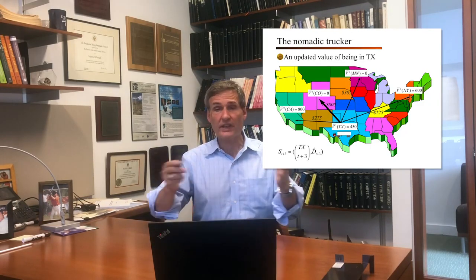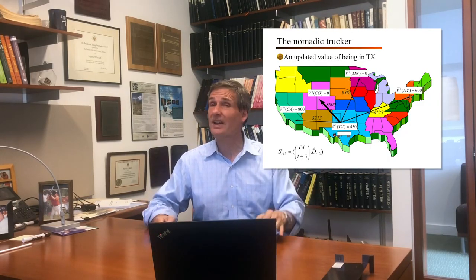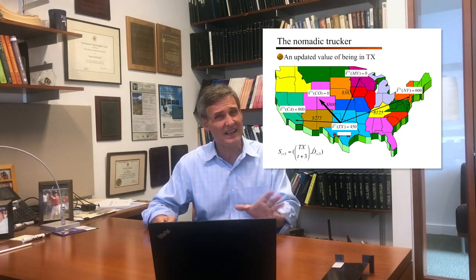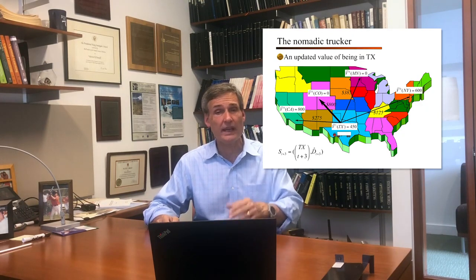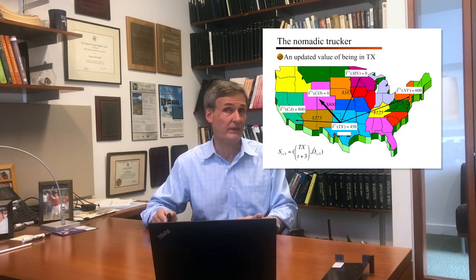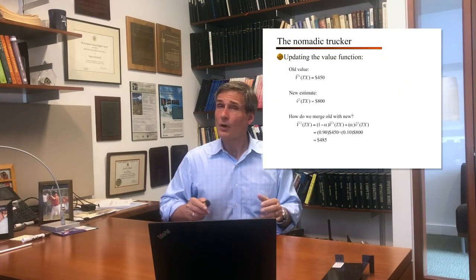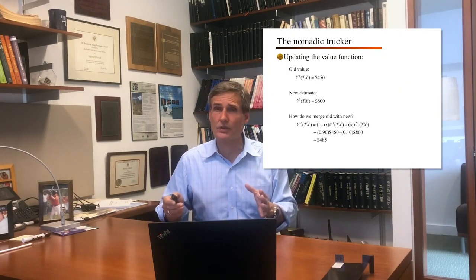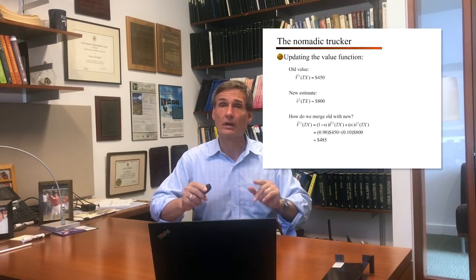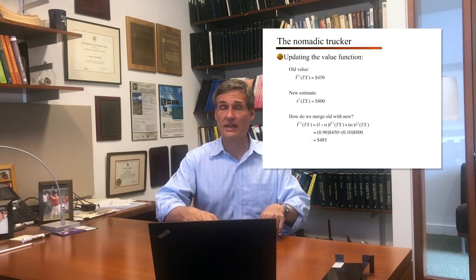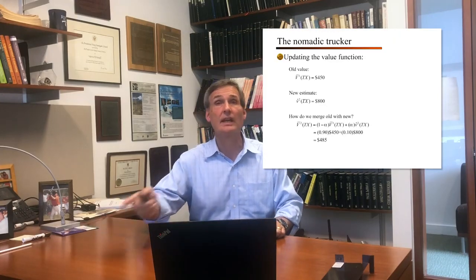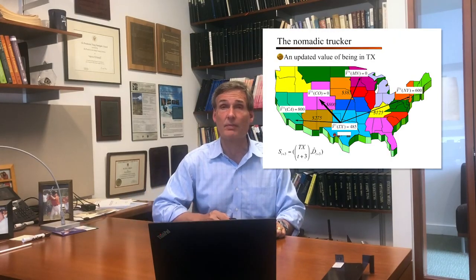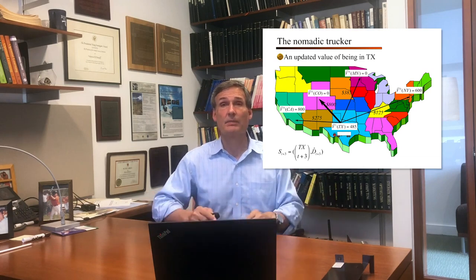Now I'm back in Texas, looking at various loads. There's one going to Colorado — I've never been there, but it's $800. The old estimate of the value of being in Texas was $450. Now I have this $800 load, so I smooth the two using a smoothing factor of 0.1 — a learning rate, step size. I take 0.9 times the old estimate plus 0.1 times the new estimate, giving an updated estimate of the value of being in Texas of $485.